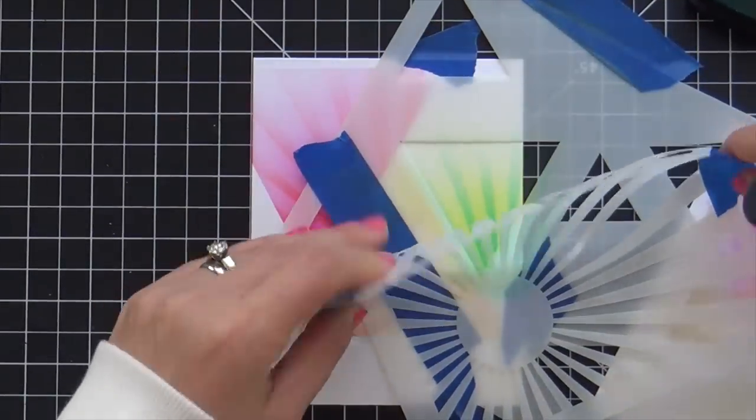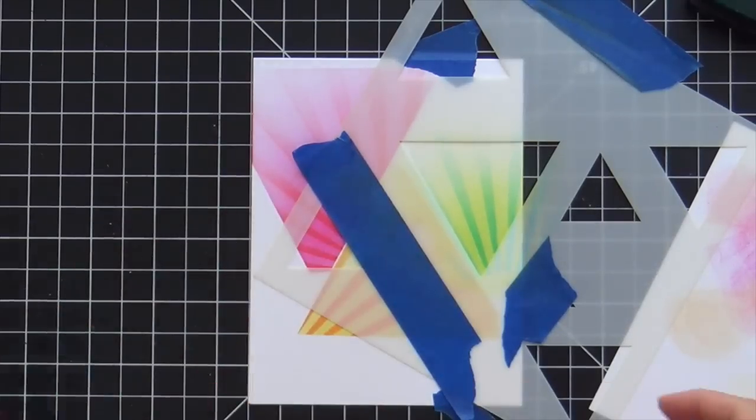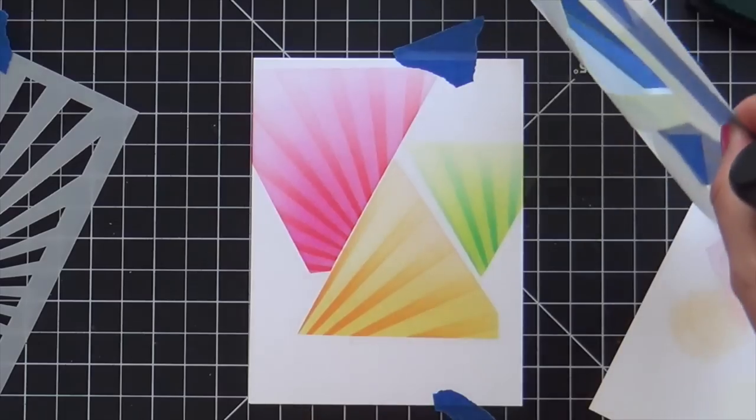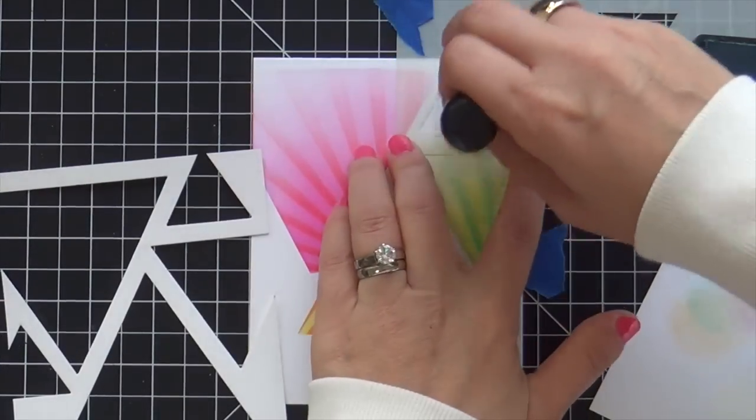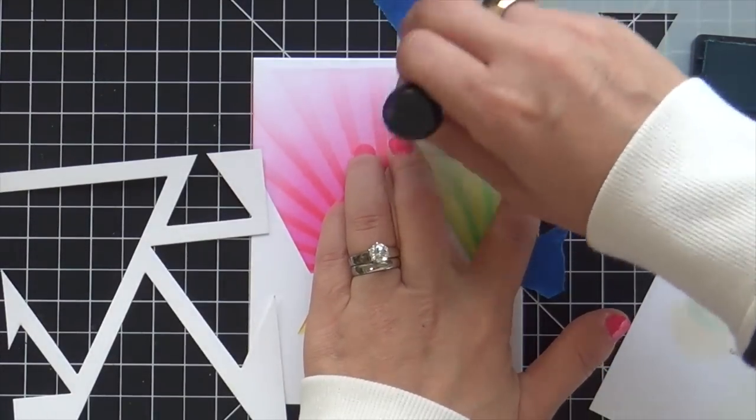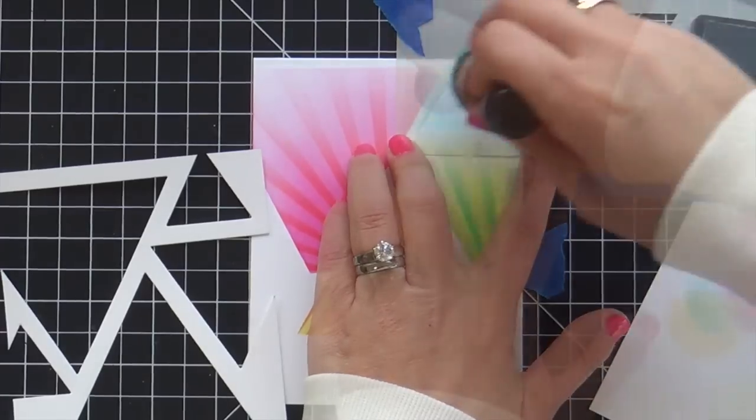Then I laid down the Sunrise Radiating Ray stencil and went in with Peacock Feathers. From here on out it's going to start getting easier because you've got the triangle stencil that does all the work for you and then you just lay over top.